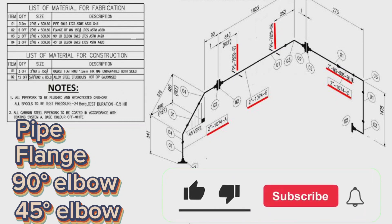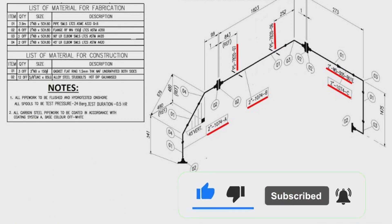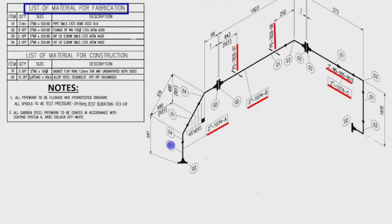Let's find out the list of materials used in this drawing in more detail. List of materials for fabrication shows on this table. Detail number 1 was used in several places in the pipe drawing.